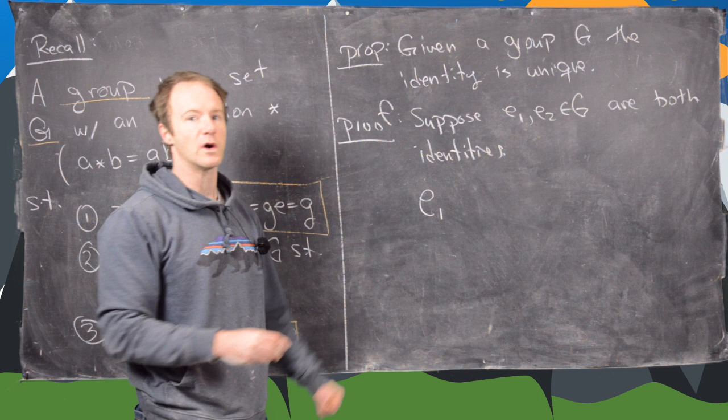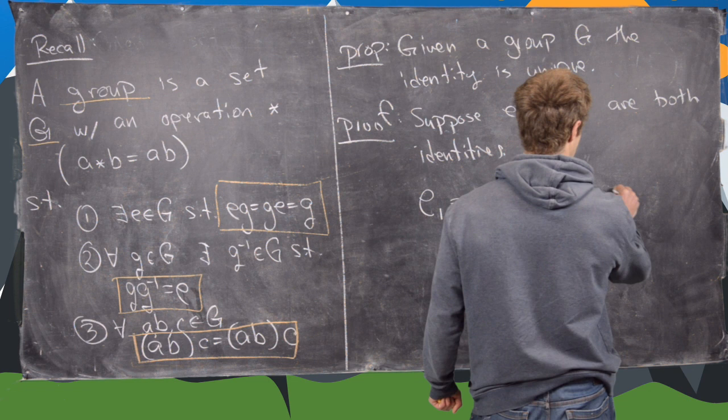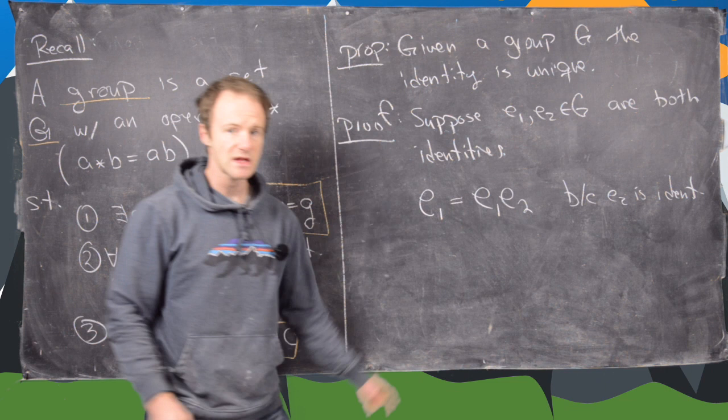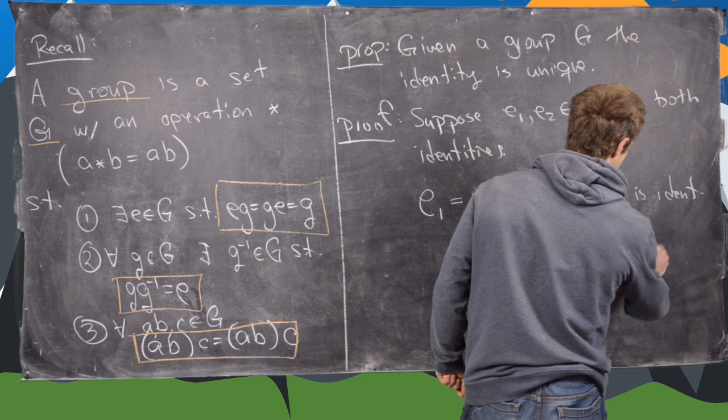And notice we'll multiply this by E2. So E1 times E2 and these two are equal because E2 is an identity. But now we just view this in a slightly different way and notice that this equals E2 and that's because E1 is an identity.